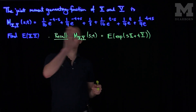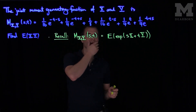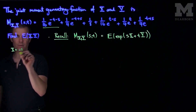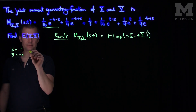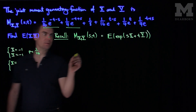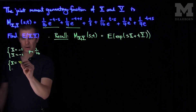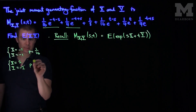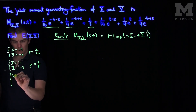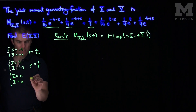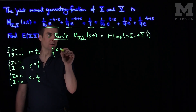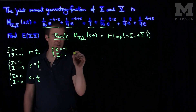When you have a discrete number of terms in your moment generating function, as we do here, we can actually pluck off the values of x and y respectively. This term tells us that x equals negative 1 and y equals negative 1 with probability 1 over 16. This next term tells us that x equals 1 and y equals negative 1, since x is the s term, with probability 1 quarter. This 1 eighth term has no exponent, so x equals 0 and y equals 0 with probability 1 eighth. This term gives x equal to negative 1 and y equal to positive 1 with probability 1 sixteenth.